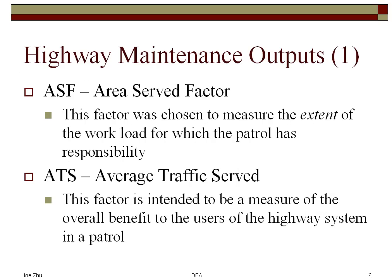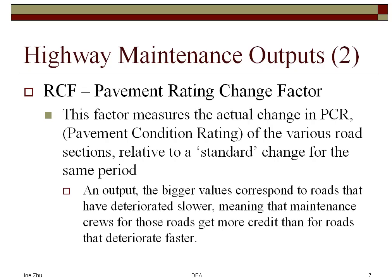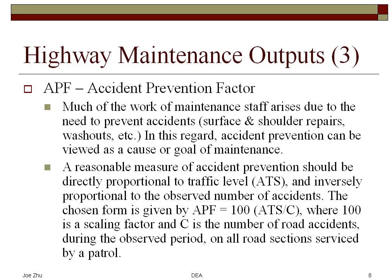Let's look at the outputs for this problem. The first output is the ASF, which stands for the air reserve factor — this measures the extent of the workload for which the patrol has responsibility. The second output is the average traffic served. Then there is the pavement rating change factor. A bigger value indicates the roads have deteriorated slower, meaning those crews get more credit, so a high value indicates better performance. We also have the accident prevention factor.